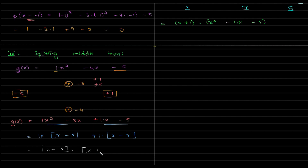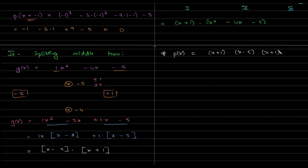Between those two groups, x minus 5 is the common factor, leaving x + 1. Therefore p(x) = (x + 1)(x − 5)(x + 1). We got x + 1 two times — that's not an issue, this is correct. The zeros are minus 1, plus 5, and minus 1.